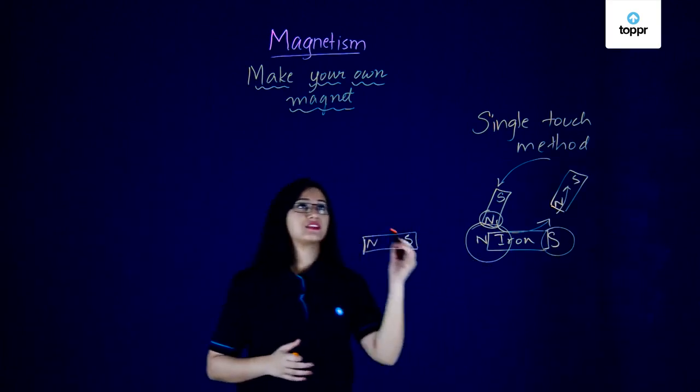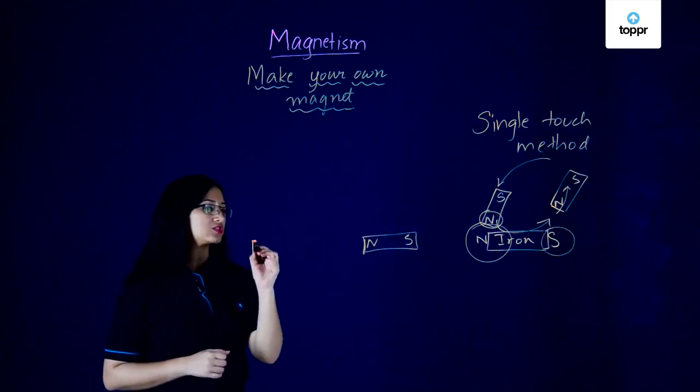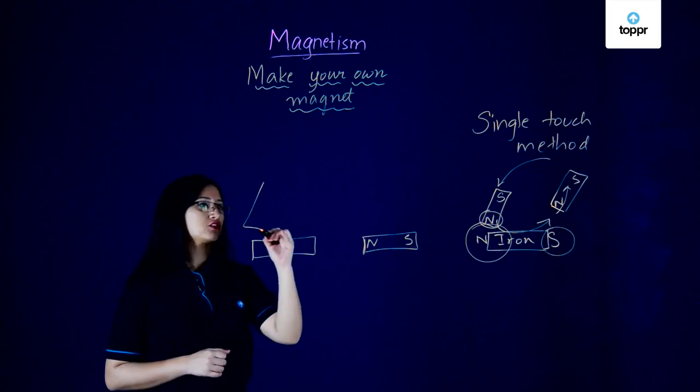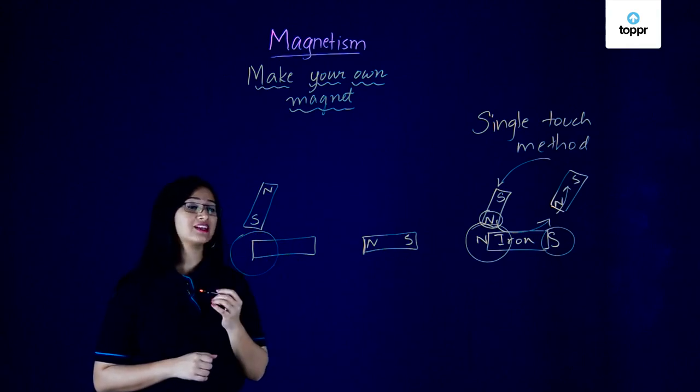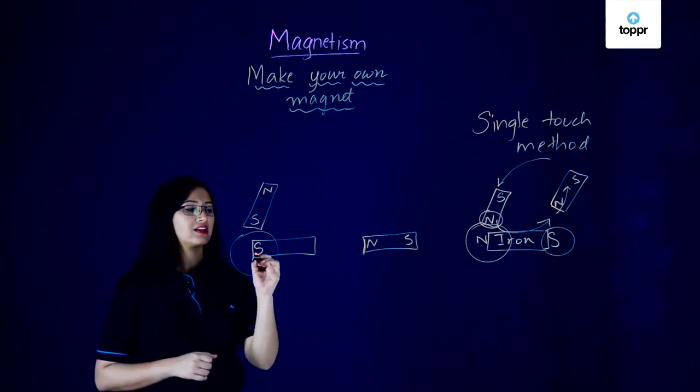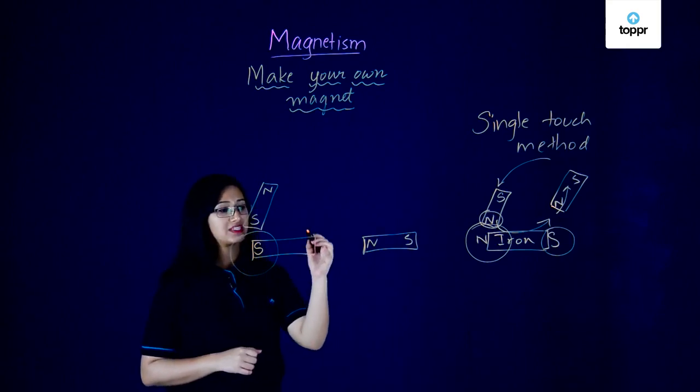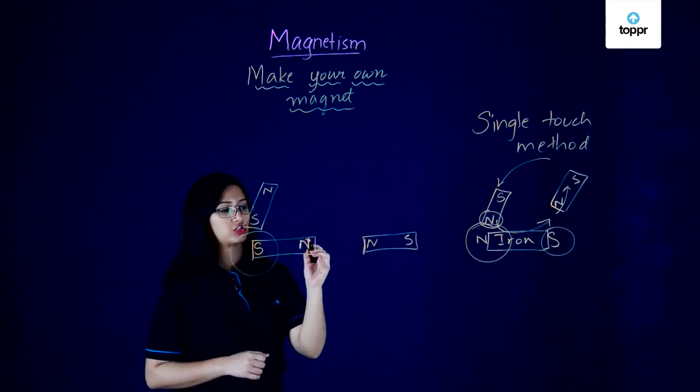Similarly, if you did the same thing but using the south pole of the magnet, can you guess what pole this end of the magnetic material would have? Yes, you're right. It would have a south pole, and the opposite end would then get a north pole.